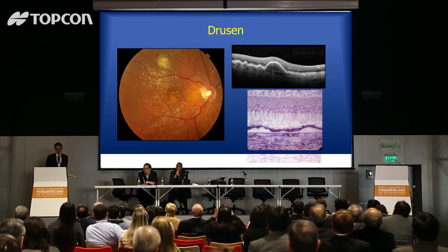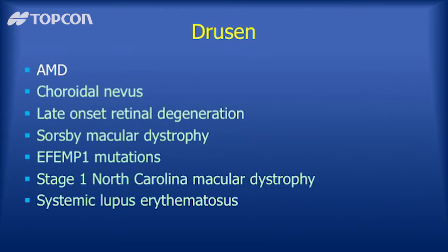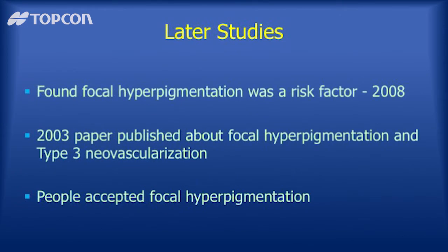Later studies by larger groups quantified the risk posed by drusen, and the definition for early AMD became essentially just drusen. Recall drusen are fatty material formed underneath the retinal pigment epithelium, high in cholesterol esters, and including complement. Drusen are found in a number of conditions, though we commonly associate them with AMD. There are about half a dozen other conditions where drusen are commonly found, though they're fairly easy to differentiate from AMD.